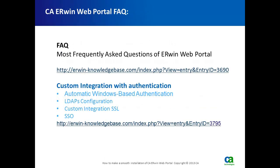CAA Erwin Web Portal frequently asked questions can be found at http://erwin/knowledgebase.com. In addition, custom integration and authentication documents can also be found on erwinknowledgebase.com, including automatic Windows-based authentication, LDAP configuration, custom integration SSL, and SSO.